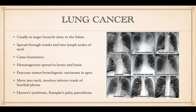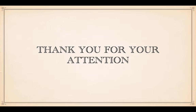Lung cancer: here are all the different types of images with different lung cancers. Usually they are in the larger bronchi, close to the hilum, and can spread through the trunks into the lymph nodes of the neck. One of the first signs is persistent hoarseness of the voice. These are pretty bad because they often spread to the bones and into the brain. A Pancoast tumor is a bronchogenic carcinoma in the apex of the lung. Those can move into the neck because the apex projects above the clavicle into the neck area, involving the inferior trunk of the brachial plexus, and can cause Horner's syndrome, Klumpke's palsy, and paresthesia down the arm. That's it for now — thank you for your attention and good luck studying.